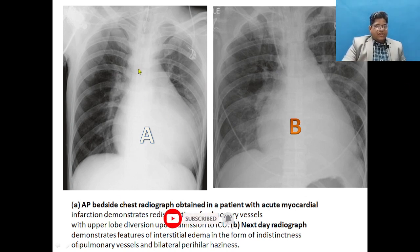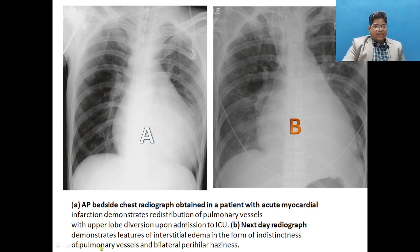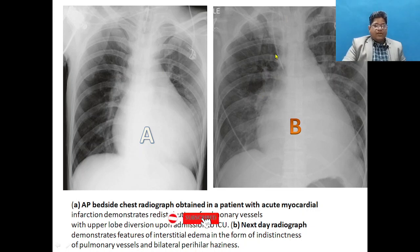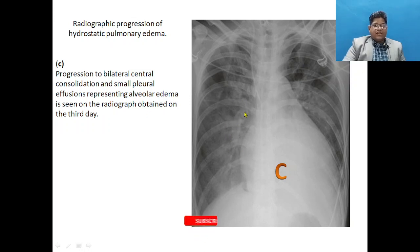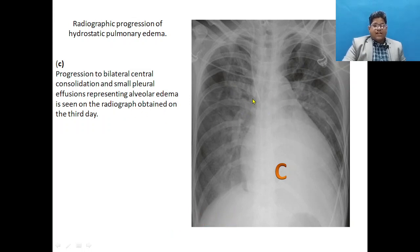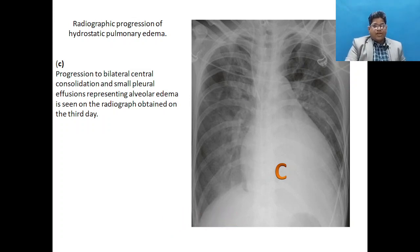Here is the AP bedside film of a patient with acute myocardial infarction, demonstrating redistribution of pulmonary vessels with upper lobe diversion on admission to the ICU. The next day we can see features of interstitial edema developing as indistinctness of pulmonary vessels, with bilateral perihilar haziness. In the same patient, there is progression to bilateral central consolidation and a small pleural effusion representing alveolar edema by day three, showing apparent cardiomegaly.